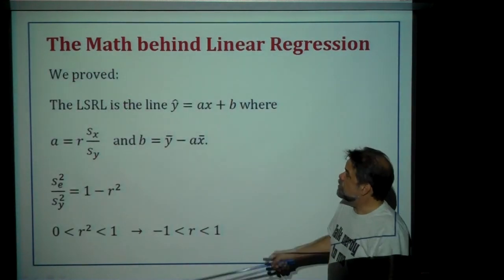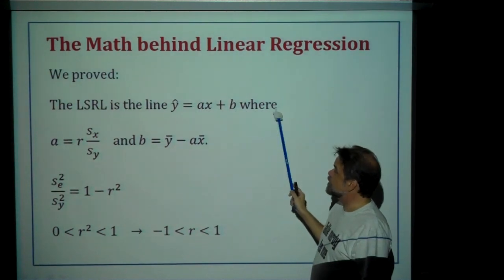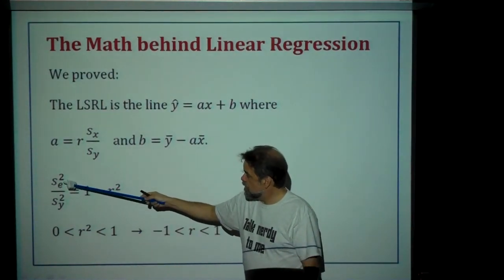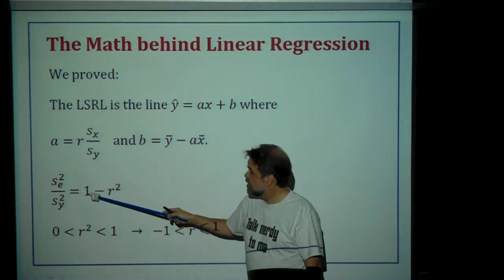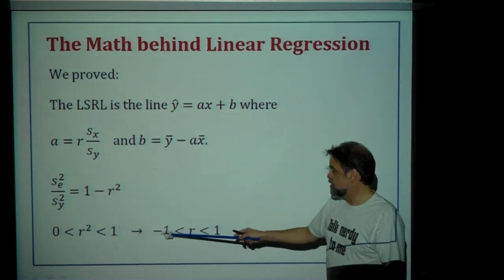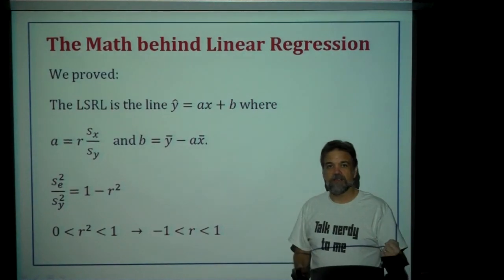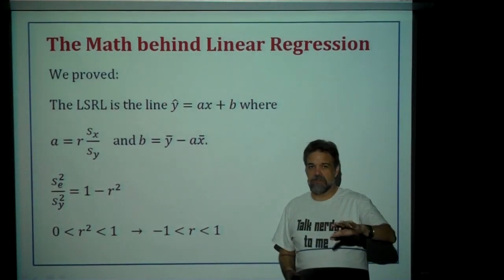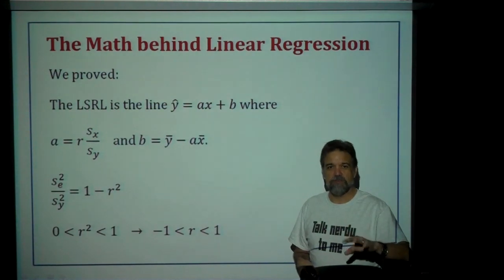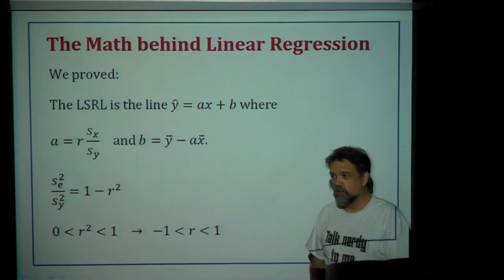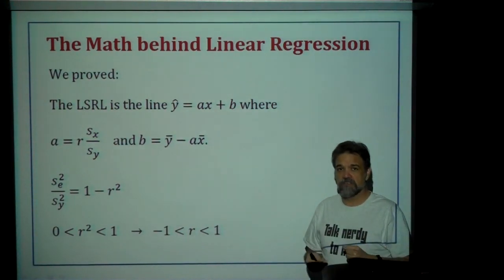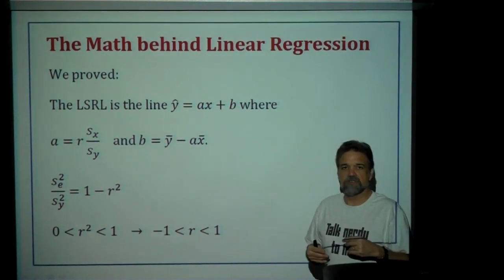So what have we proven today? We proved that the least squared regression line is y-hat equals ax plus b, where a equals r times s-y over s-x and b equals y-bar minus a times x-bar. We proved that the ratio of the variance of residuals divided by the variance of y is one minus r-squared, and we also proved that r-squared has to be between zero and one, meaning r has to be between negative one and one.